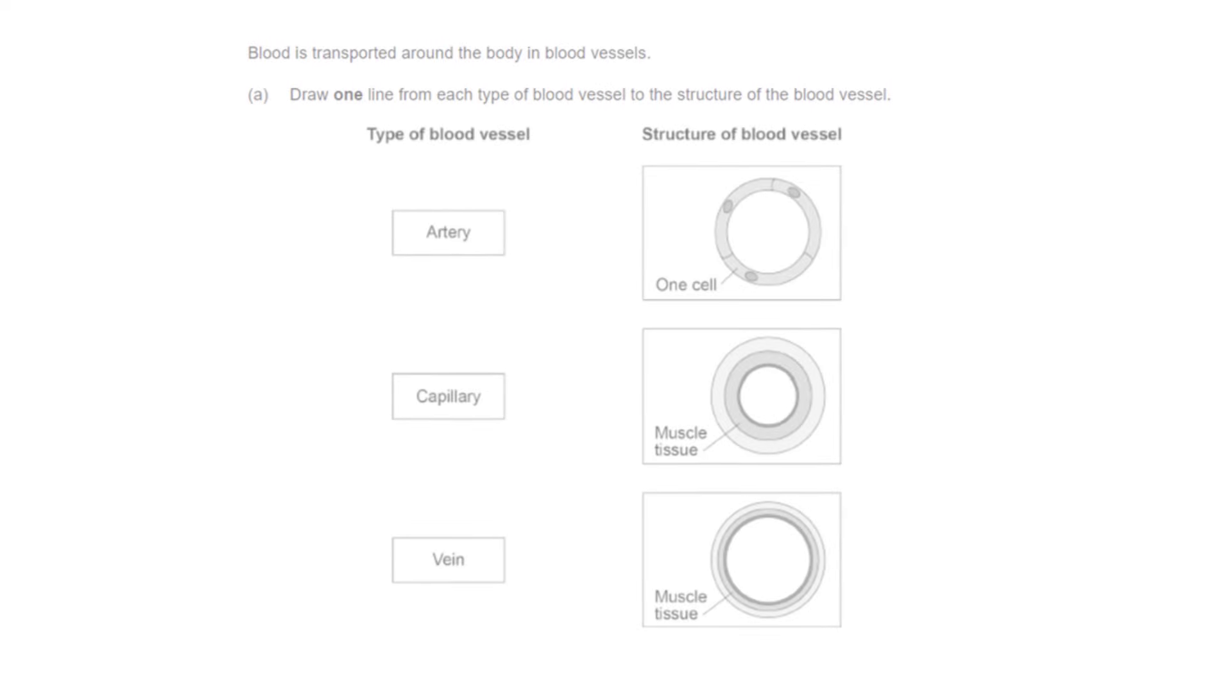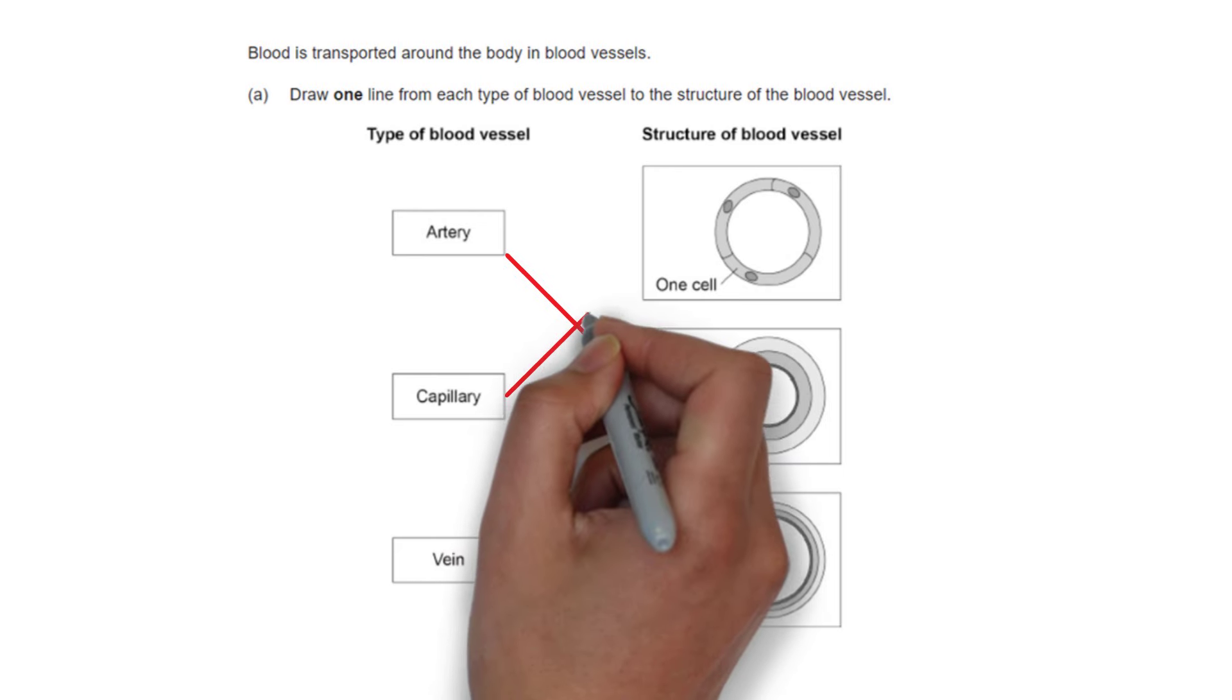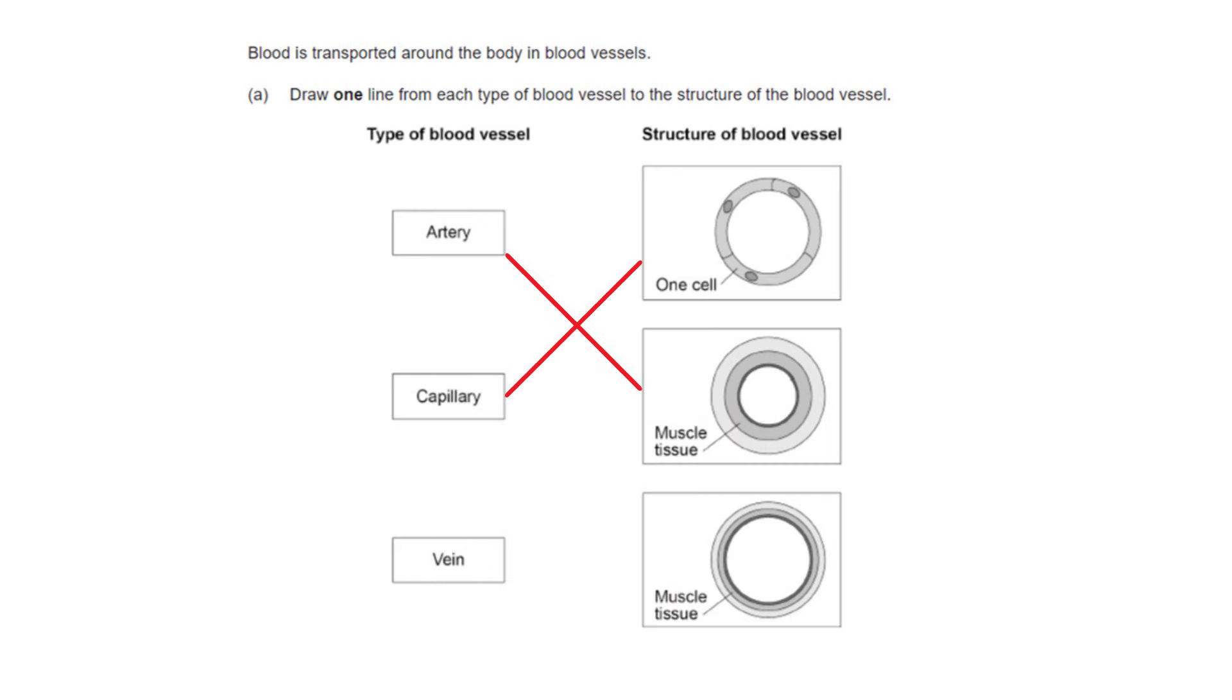This next question is asking us to draw one line from each type of blood vessel to the structure of the blood vessel. So we need to know that arteries are very very thick so that's going to go to the thick muscular tissue. The capillary is only one cell thick so that's going to go to the top. And then veins, they do have some muscular tissue but not as much as arteries.